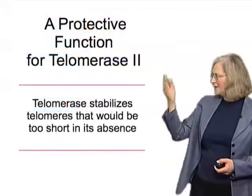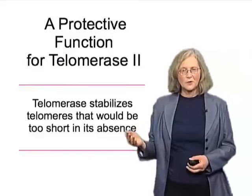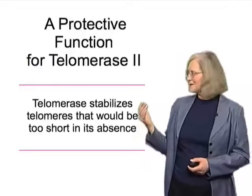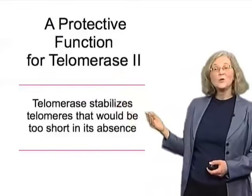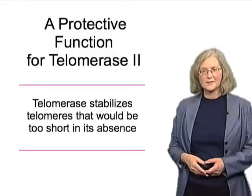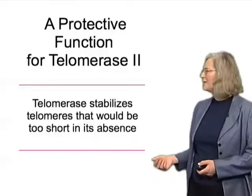We used a trick to separate out the telomere lengthening property of telomerase from its ability to stabilize telomeres, and we saw that if you have this telomerase present throughout, even though the telomeres remain short, they are perfectly stable and the cells can keep dividing. This is the second piece of evidence — the first was in yeast systems in part one — that telomerase has a protective function, stabilizing telomeres that otherwise would have been too short in its absence. This is not unique to human cells; it's been seen experimentally in yeast systems as well.